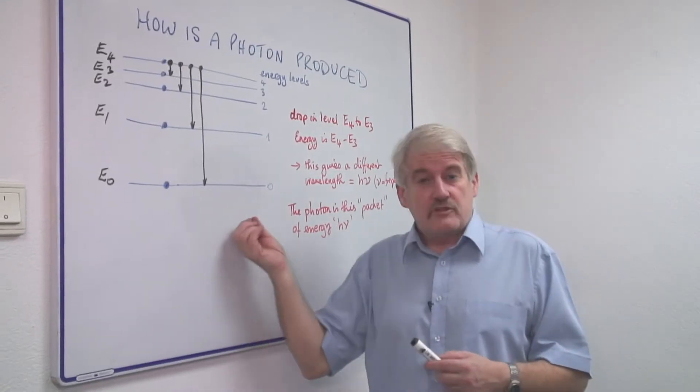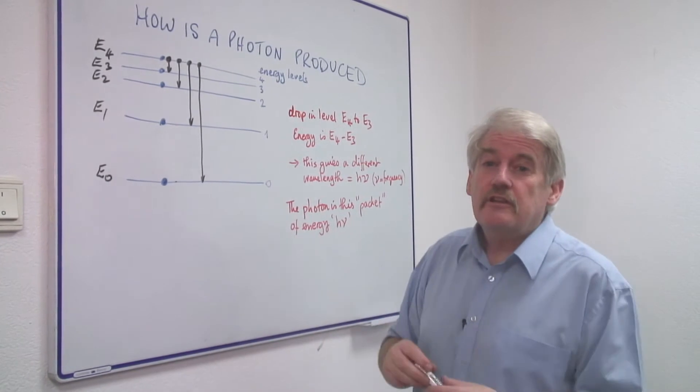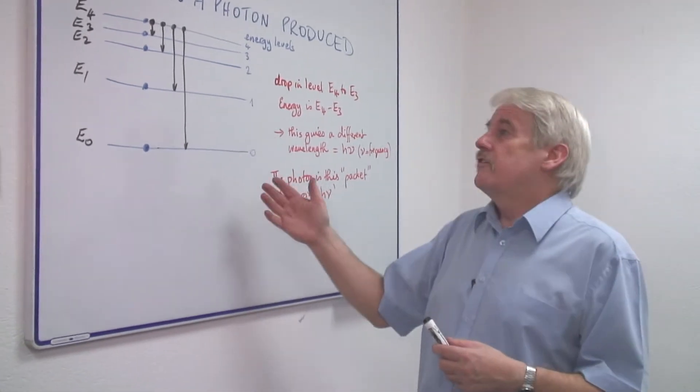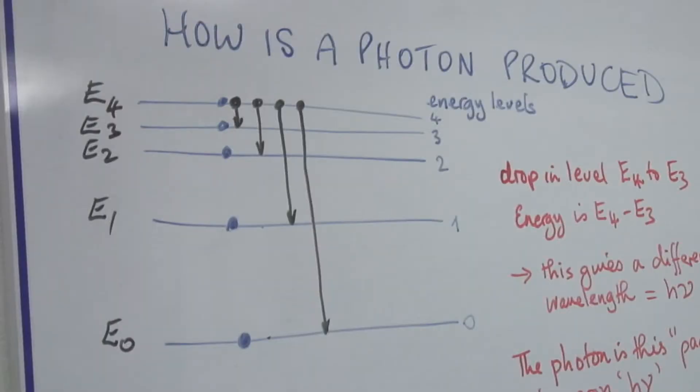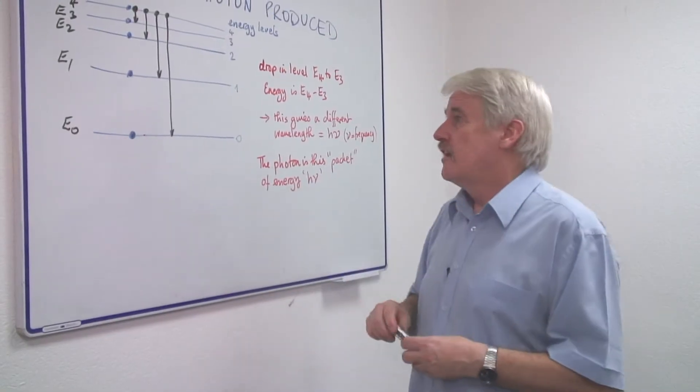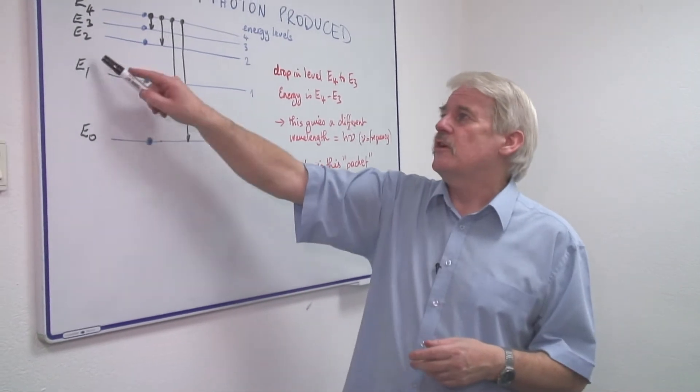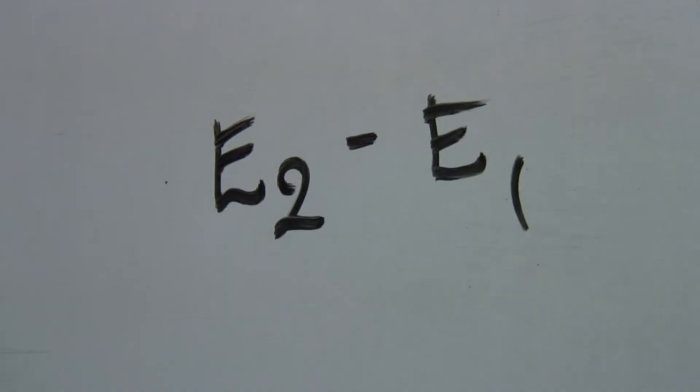And it was discovered last century, the twentieth century, that electrons can't have any levels, they can only have specific levels of energy. And we've called these E naught, E1, E2, E3, E4. E4 is bigger than E naught.